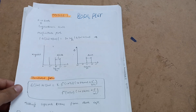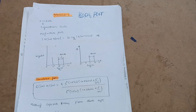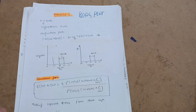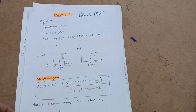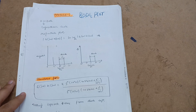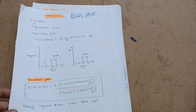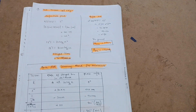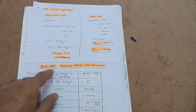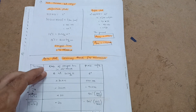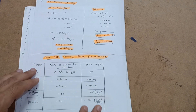Hello everyone, hope you are all doing well. Welcome back to another lecture on control engineering - the Bode plot. We were discussing the Bode plot, and in the previous lecture I covered the introduction part. Now let's proceed to the numerical part, which is worth 20 marks in the VTU examination. Remember the Bode plot summary chart from the previous lecture - you need this chart to tackle the problems.